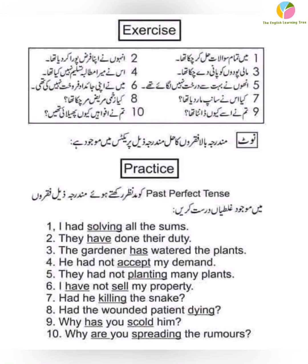Now let's look at the exercise for past perfect tense. I had solved all the sums — the third form of 'solve' will be used. They had done their duty. The gardener had watered the plants. He had not accepted my demand. They had not planted many plants. I had not sold my property.